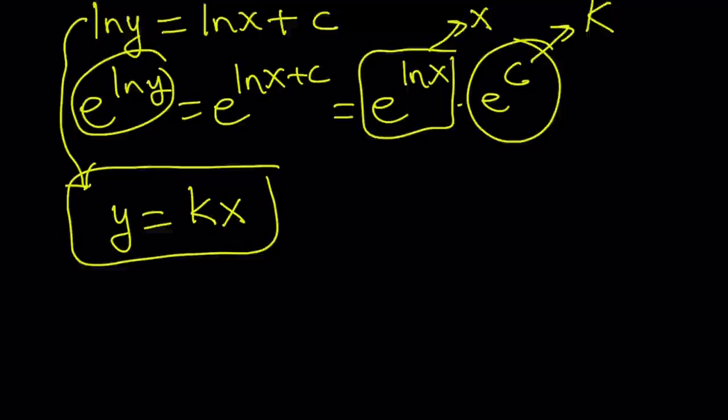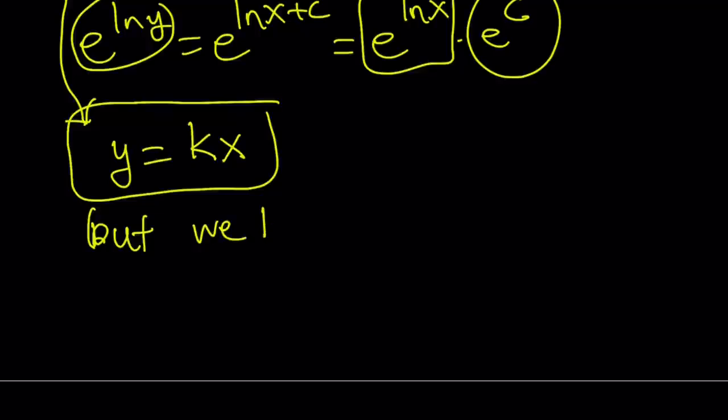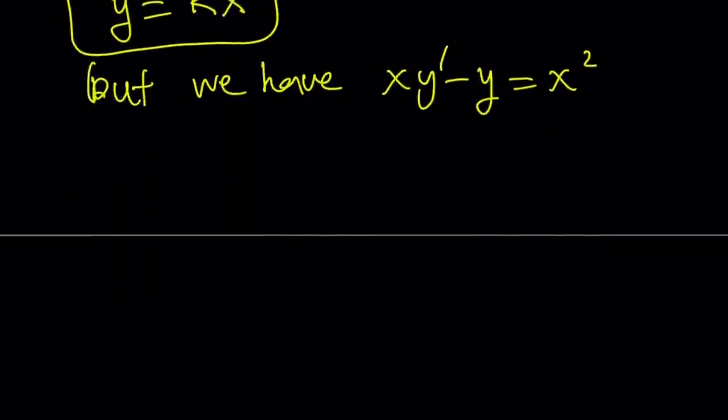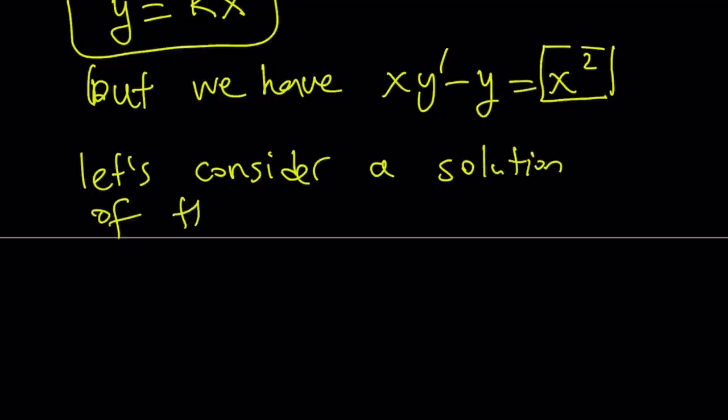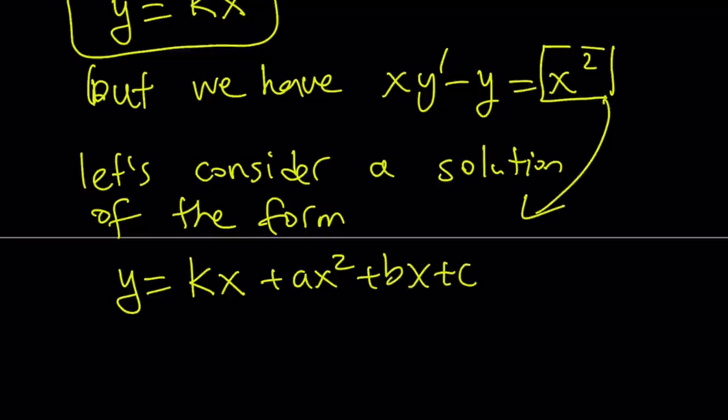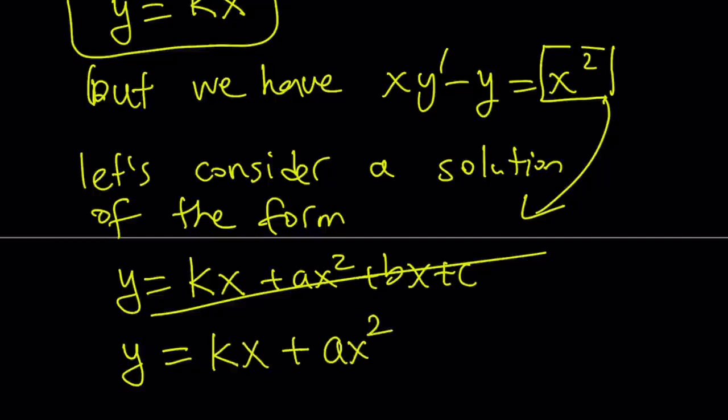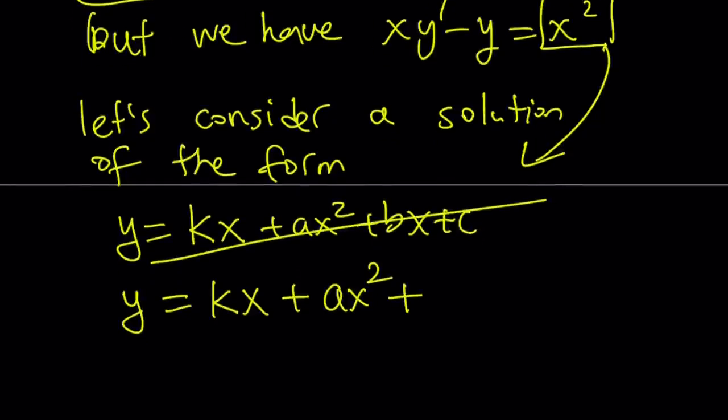But this is just the homogeneous version, but we do have, but we have xy prime minus y equals x squared. That was our original equation, right? Okay, now how do we include the non-homogeneous solution here? We're going to be considering, because of x squared on the right-hand side, we are going to consider a solution of the form. Now normally you would assume something like this. You would have the kx, which is always a solution because it makes the right-hand side equal to 0. You would add something like ax squared plus bx plus c because of the presence of the quadratic term. But since you already have a linear term like kx, you don't really need to do this. You can just go ahead and assume something like this. y equals kx plus ax squared plus c. If you don't want to use a c, you could probably use, let's just use m.